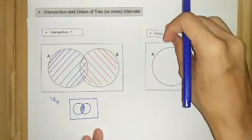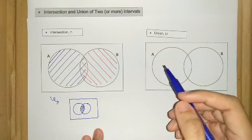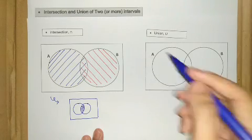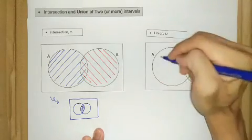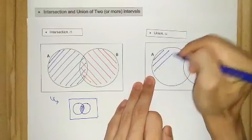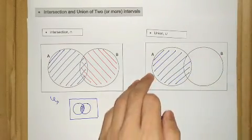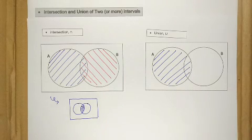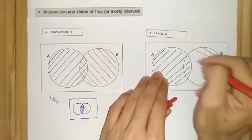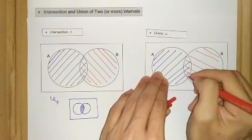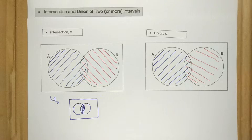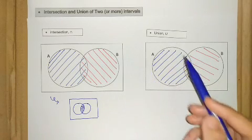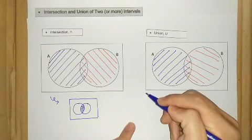What about the union? Again, what we do is shade each set one by one. We start with A, just like we did for the intersection, and then we do the same for set B. For union, what we want to consider is the element for either A or B — so we consider all the elements, whether from A or from B.